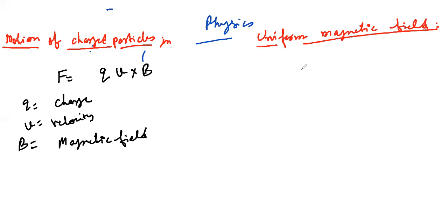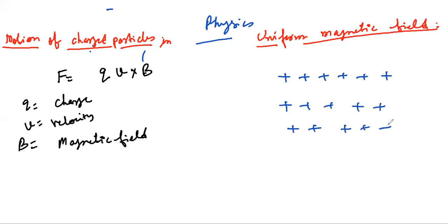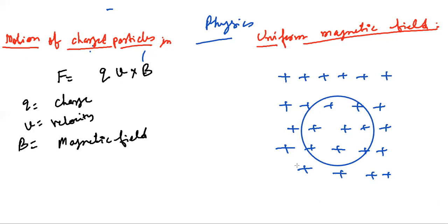Suppose you take an example here. This is your magnetic field — the cross symbol represents the field. Inside this, one charged particle enters with certain velocity. We have to derive what will be the motion of the particle.